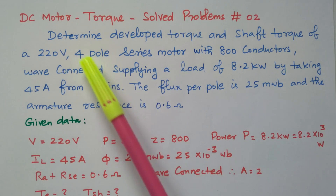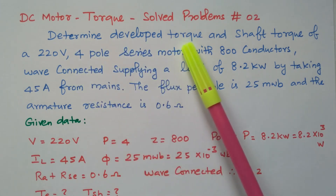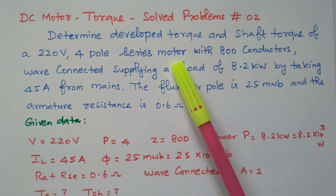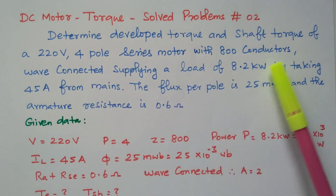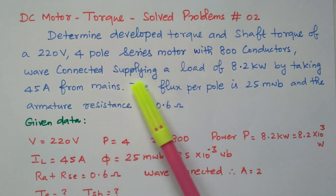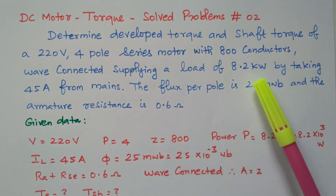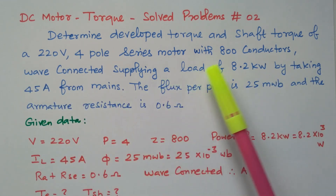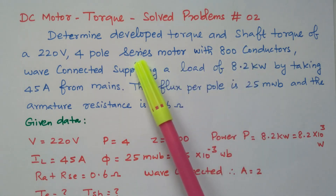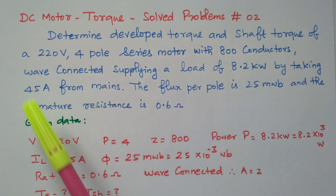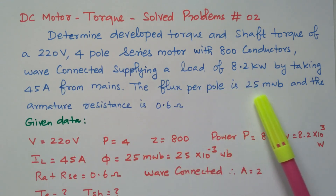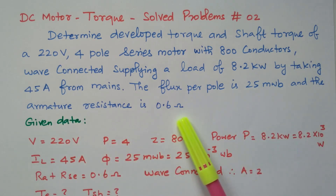Now we will go to the problem. Determine the developed torque and shaft torque of a 220 volt, 4-pole series motor with 800 conductors, wave connected, supplying a load of 8.2 kilowatt by taking 45 ampere from the mains. The flux per pole is 25 milliweber and the armature resistance is 0.6 ohm.